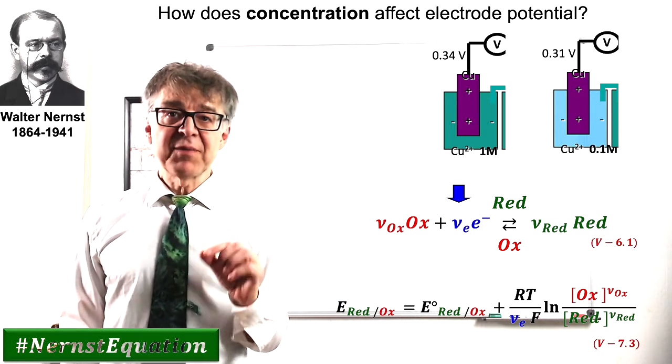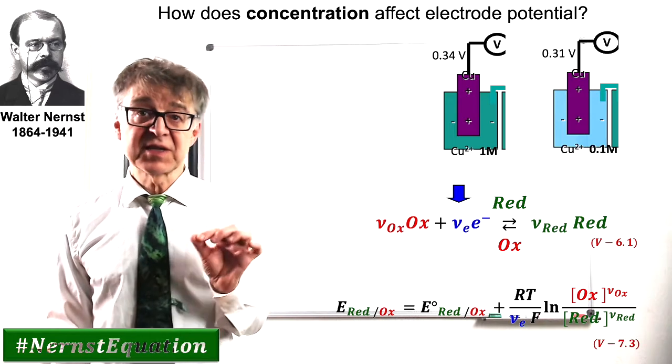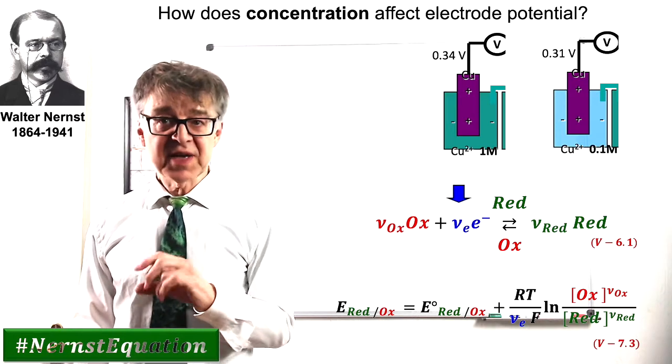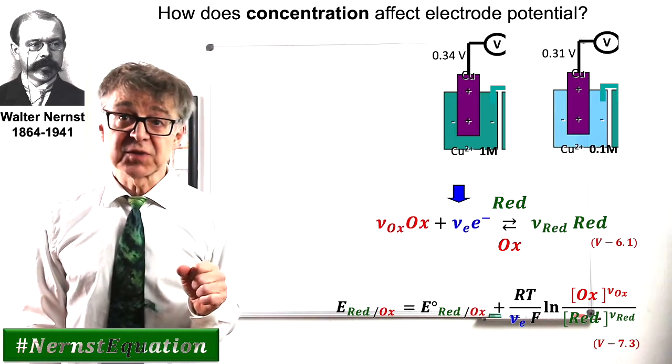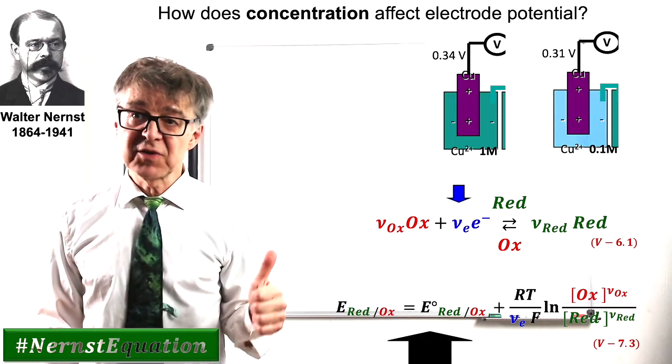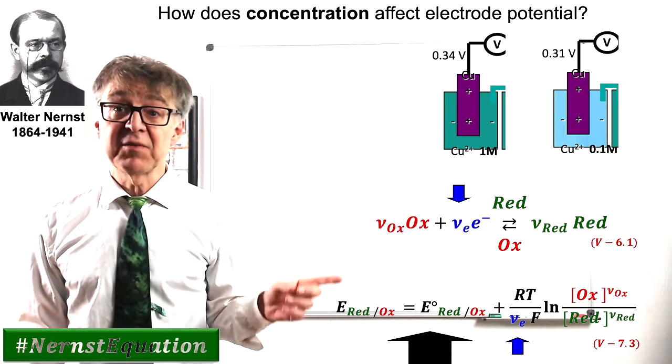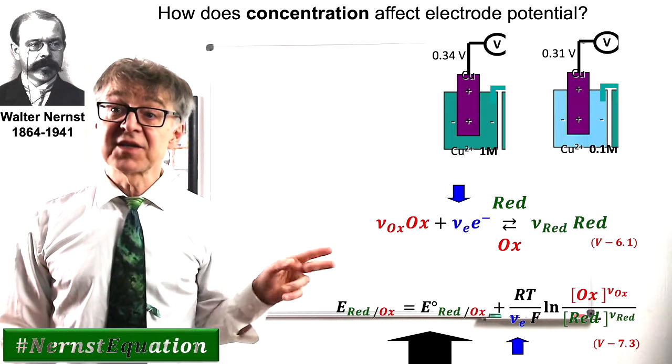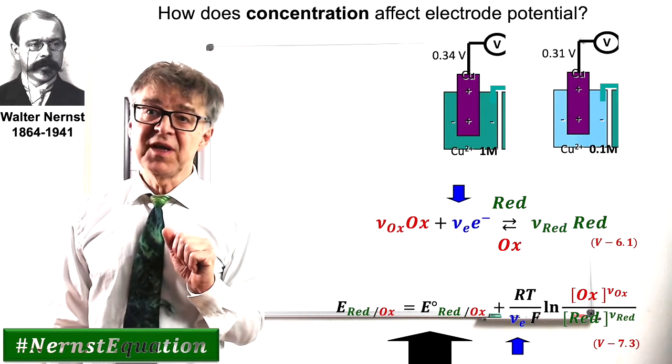Note that each and every parameter that occurs in the electrode reaction also does appear in the Nernst equation. The number of electrons converted nu sub E can be found in the Nernst factor RT over nu sub EF.